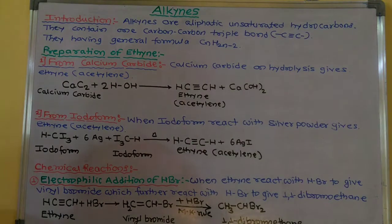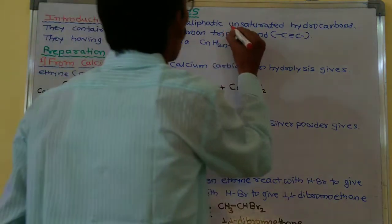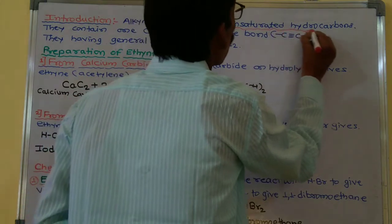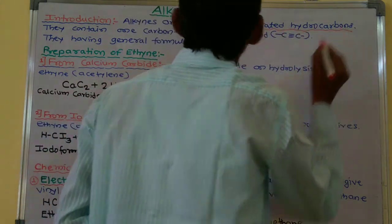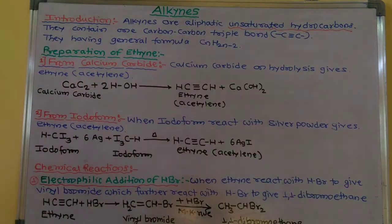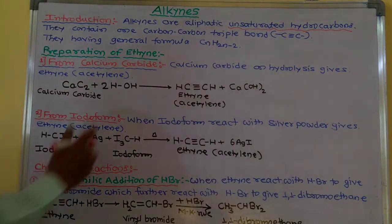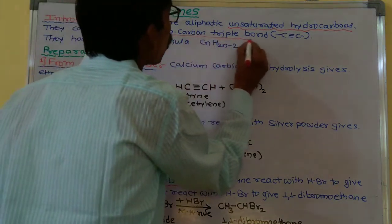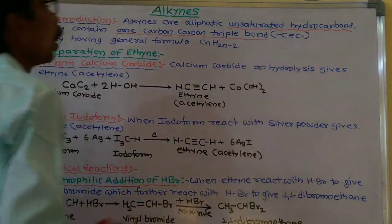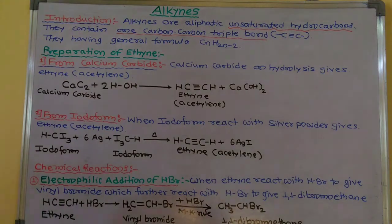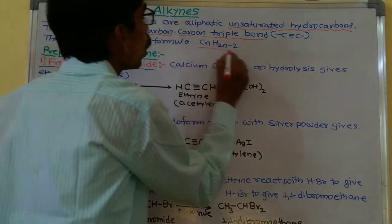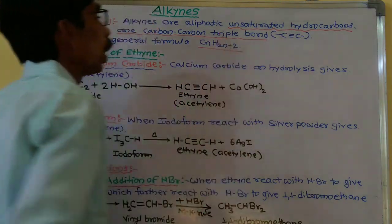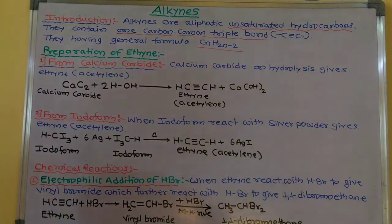Alkenes are aliphatic unsaturated hydrocarbons. They contain one carbon-carbon double bond. And they have a general formula of CnH2n-2. This is the introduction.